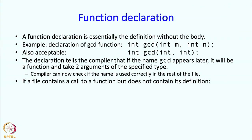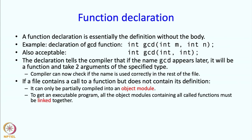If a file contains a call to a function but does not contain its definition, the compiler will assume that the definition will appear elsewhere — that is the whole point of putting in the declaration, such as int gcd(int n, int n) without the body. However, the compiler will not be able to compile it as a complete main program, and if some function body is missing it cannot compile a full executable. What it can compile your file into is called an object module. To get an executable program, all the object modules containing the called functions must be linked together.